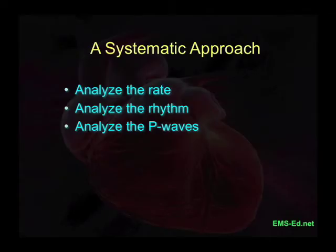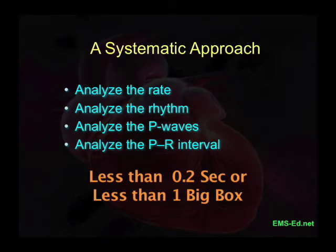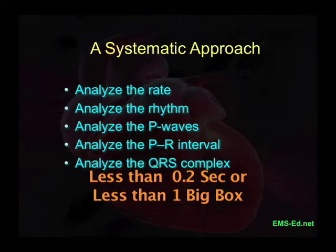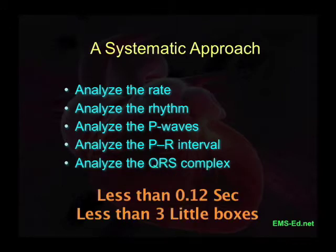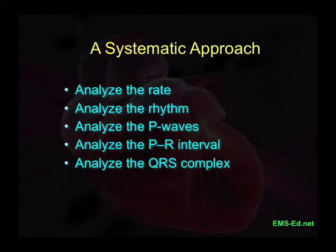Analyze the P waves. Are there P waves? Do we have a P wave for every QRS complex? Do we have a QRS for every P wave? Analyze the PR interval — is the interval within normal parameters in length, and is the length constant? Analyze the QRS complex: is it wide or narrow? Does it contain a physiological or pathological Q wave? Does it contain a delta wave? Again, some things are more germane in the setting of a 12-lead acquisition than in a 3-lead.